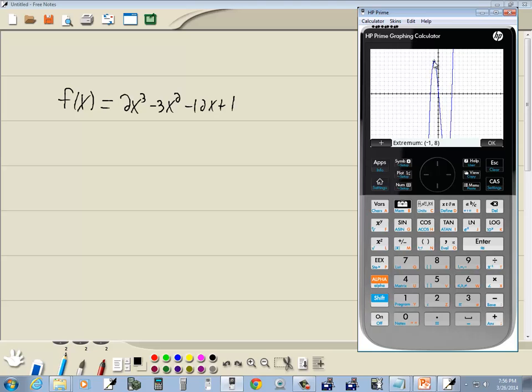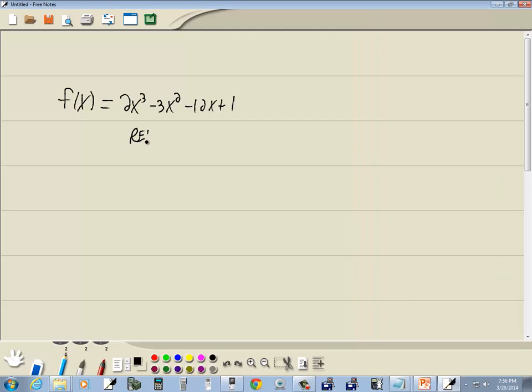And you can see where the cursor is, and you have to look at it and tell what it is, so the calculator won't tell you that. It's a relative max. Relative max is at negative 1, 8.